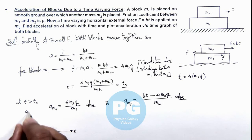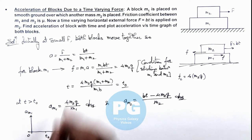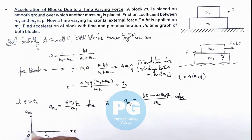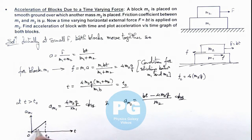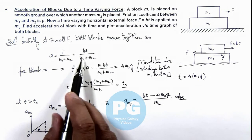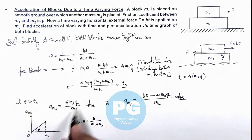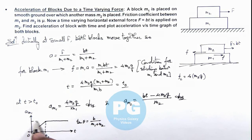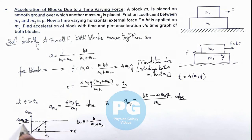Plotting the acceleration vs. time graph: for m1, from t = 0 to t0 the acceleration grows linearly with time. The slope angle theta satisfies tan(theta) = b / (m1 + m2). After t0, the acceleration of m1 becomes constant and does not change further. This constant value is mu × m2 × g / m1.